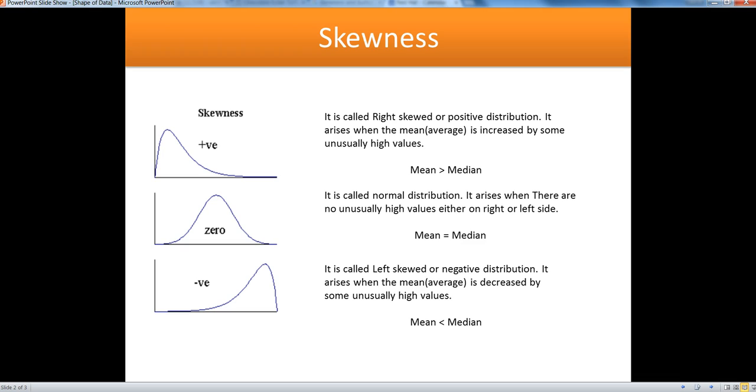The second one is normally distributed data, in which mean equals median. It happens because you don't have any positive or negative values on both sides, on the left or right side. In this case, your mean will be equal to median, which goes by the definition of central tendency.